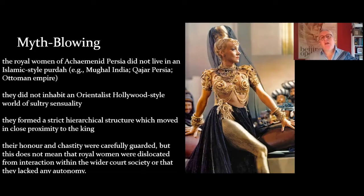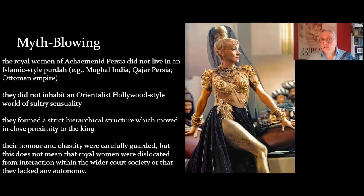The Harim, as far as the ancient Persians were concerned, was a highly organized hierarchical structure which operated around the figure of the great king — in this case, of course, Xerxes, Ahasuerus. The women of the Harim were carefully guarded for their chastity, but that does not mean that these women were dislocated from interaction with other parts of society, or that they lacked any freedoms, or indeed autonomy.